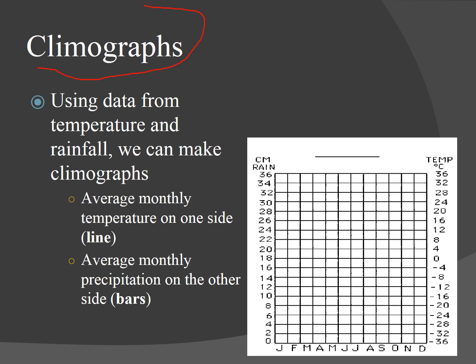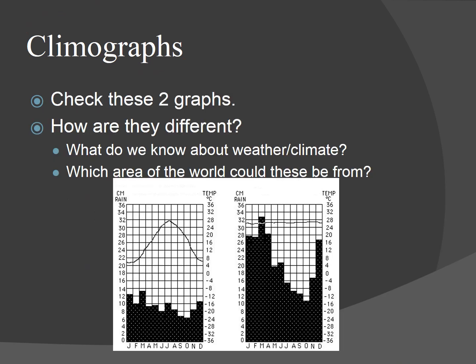So climographs — obviously it's a type of graph that talks about climate, using data from temperature and rainfall. On one side is average monthly temperature and on the other side is average monthly precipitation. The lines represent temperatures and the bars represent average monthly precipitation. The x-axis shows the months of the year.